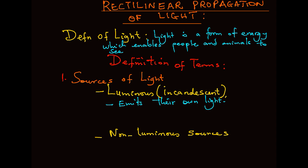Examples of luminous sources are the sun, stars, burning candles, glowing worms, and light bulbs. The second category is non-luminous sources.